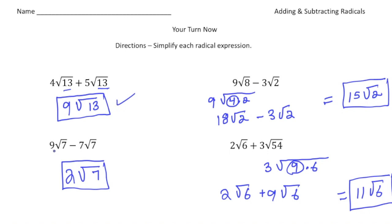Down here another easy one. 9 radical 7 minus 7 radical 7. Again, the radical signs are the same, so we subtract 9 take away 7 and that gives us 2 radical 7.